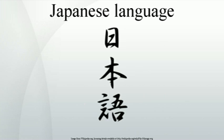Japanese word order is classified as subject-object-verb. Unlike many Indo-European languages, the only strict rule of word order is that the verb must be placed at the end of a sentence, possibly followed by sentence-final particles. This is because Japanese sentence elements are marked with particles that identify their grammatical functions. The basic sentence structure is topic-comment. For example, kochira wa Tanaka-san desu — kochira (this) is the topic of the sentence, indicated by the particle wa.